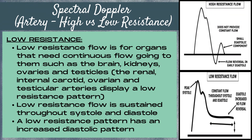Low resistance flow is for organs that need continuous flow going to them, such as the brain via the internal carotid artery, the kidneys via the renal arteries, the ovaries via the ovarian arteries, and the testicles via the testicular arteries — all of these display a low resistance pattern. With a low resistance flow pattern, the flow is sustained throughout both systole and diastole, which allows a constant source of blood flow. A low resistance pattern has an increased diastolic component.